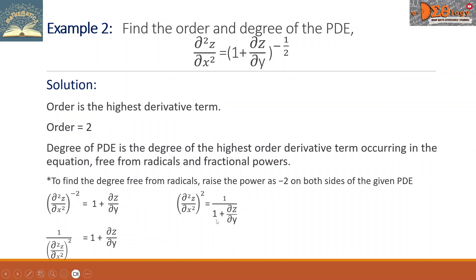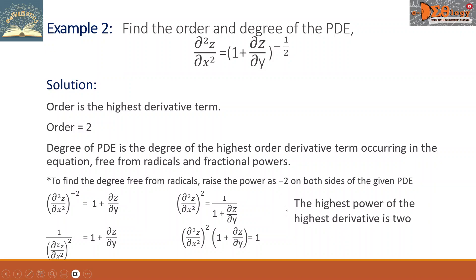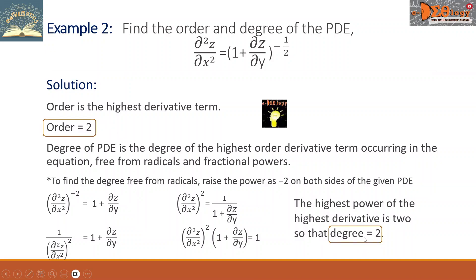The next step is: this quantity 1 plus partial derivative of z with respect to y, we are going to cross multiply on the left side. So the new equation becomes like this. At this point, the equation is now free from radicals and fractional powers. We can now collect the degree of the highest derivative. The second partial derivative here has power 2. So the highest power of the highest derivative is 2. Therefore, the degree equals 2. These are our answers.